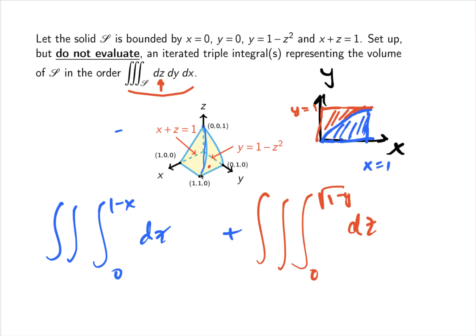This is the intersection of that plane and y equals 1 minus z squared. If I want to eliminate z in there and find a projection over the xy plane, we end up with... let's eliminate z by plugging z equals 1 minus x in here.